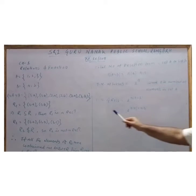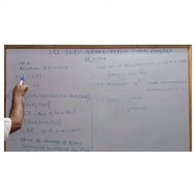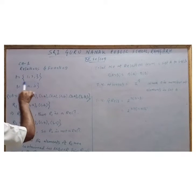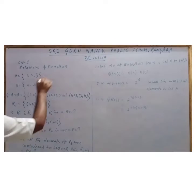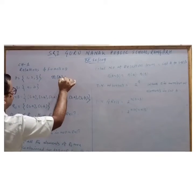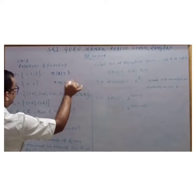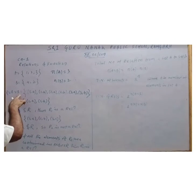You can see, how many elements are there? Three. How many elements are there? Two. So we call n(A) = 3 and n(B) = 2. And how many elements are there in A cross B? Six. Three into two.